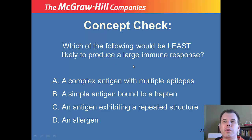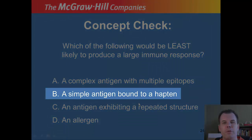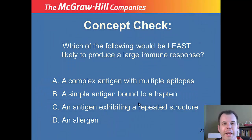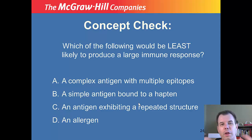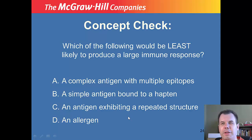Concept check: which would be least likely to produce a large immune response — a complex antigen with multiple epitopes, a simple antigen bound to a hapten, an antigen exhibiting repeated structure, or an allergen? The answer is a simple antigen bound to a hapten, because haptens are really small structures that typically don't cause a response on their own, making it very hard to generate a strong response.